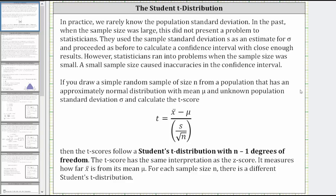If you draw a simple random sample of size n from a population that has an approximately normal distribution with mean μ and unknown population standard deviation σ, and calculate the t-score given by t = (x̄ - μ)/(s/√n), then the t-scores follow a student's t-distribution with n minus one degrees of freedom.